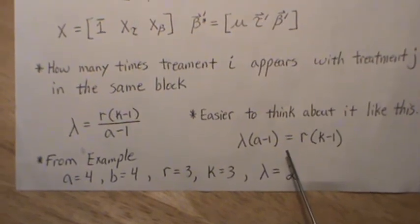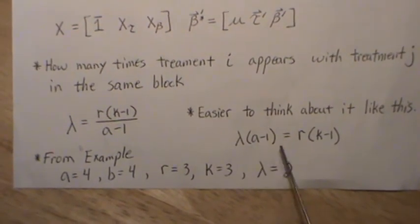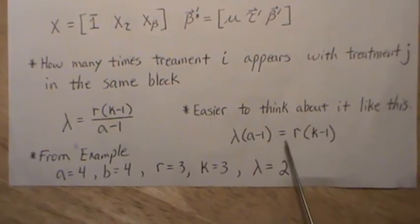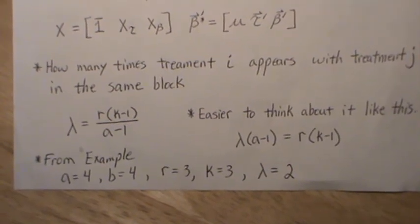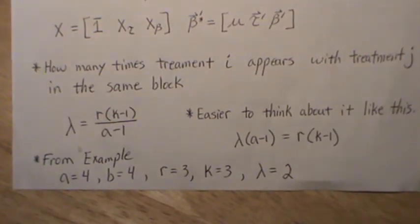It is what it is. In our example, there's A equals four treatments, B equals four blocks, each treatment is replicated three times.